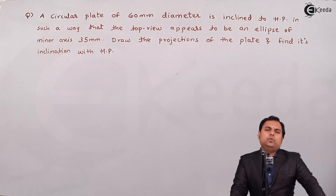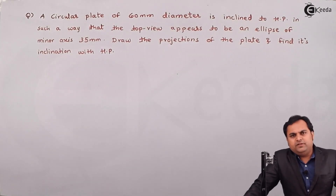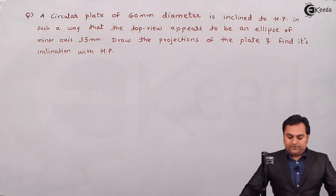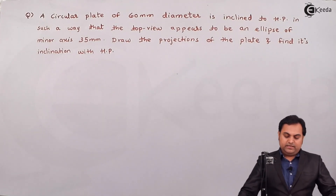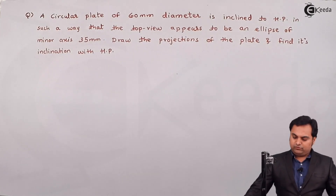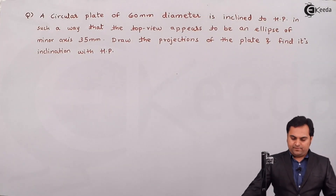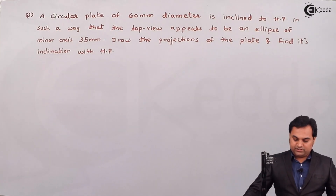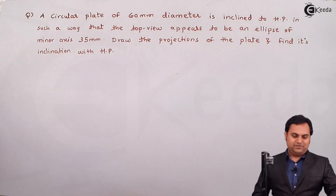Hello friends, here in this video we are going to see a problem on projection of planes. The question is: a circular plate of 60 mm diameter is inclined to HP in such a way that the top view appears to be an ellipse of minor axis 35 mm. Draw the projections of the plate and find its inclination with HP. Let us start with the solution part.